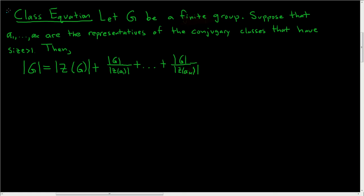In this video, we're going to prove the class equation. It says if you have a finite group G, and A sub 1 through A sub k are the representatives of the conjugacy classes that have size greater than 1, then the order of G is equal to the order of the center of G plus the sum of the orders of those conjugacy classes.